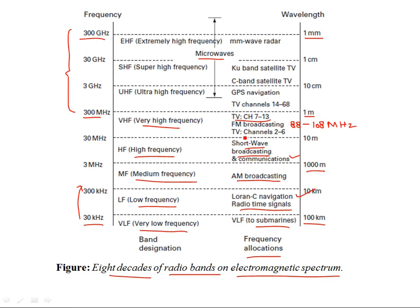As frequency becomes higher, we have more data transmission rates available, and more data can be transmitted with higher performance and efficiency. More TV channels can be accommodated. As you go into the microwave frequency range — ultra high frequency — you can have digital broadcasts with RGB TV channels, HDTV for example. There is more bandwidth available at high frequencies.